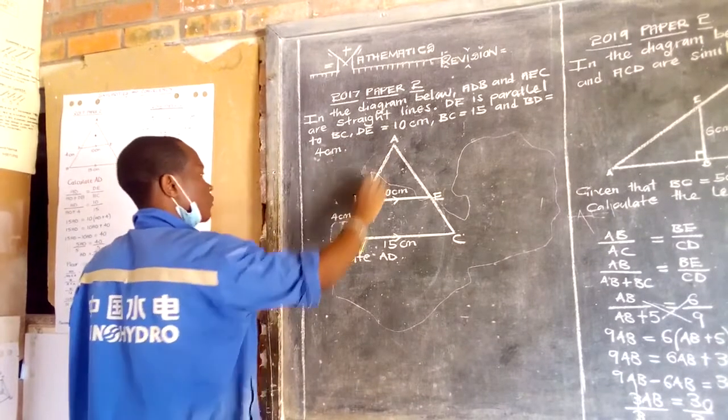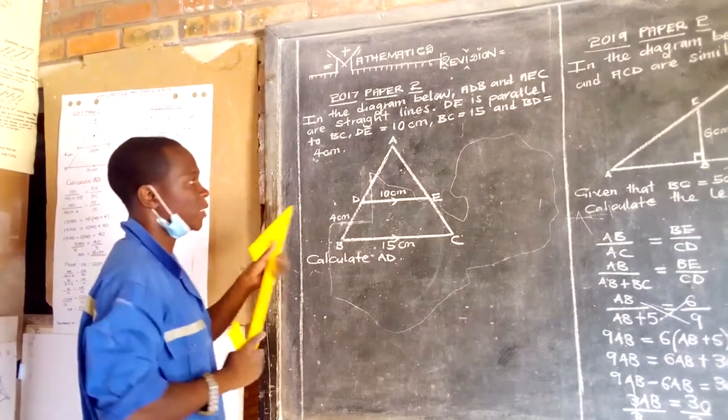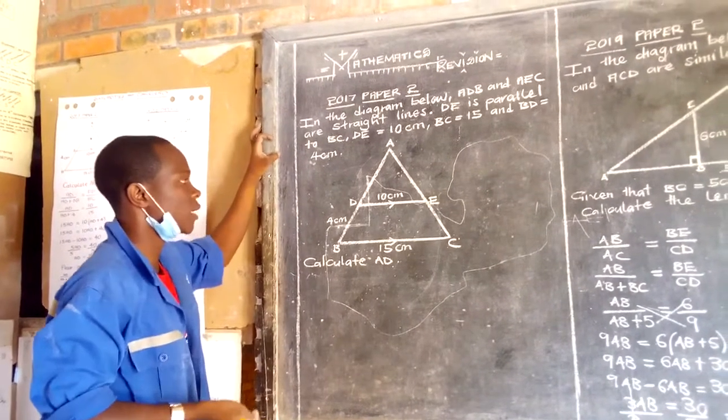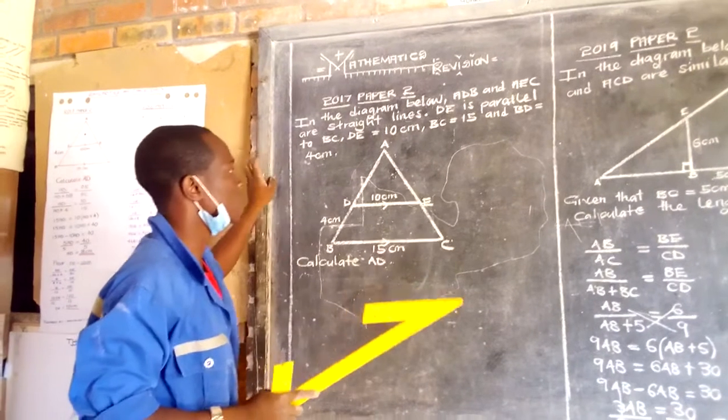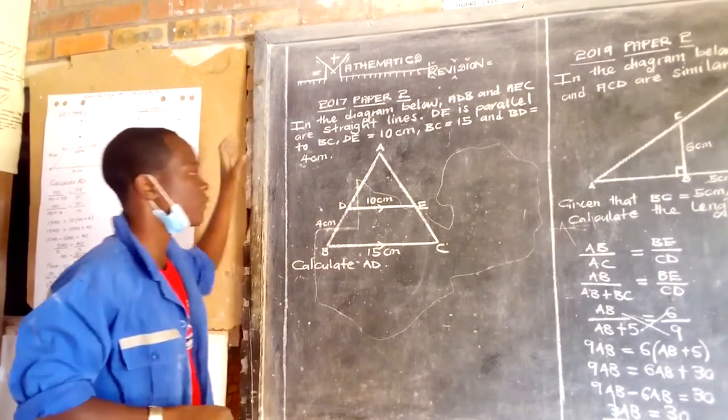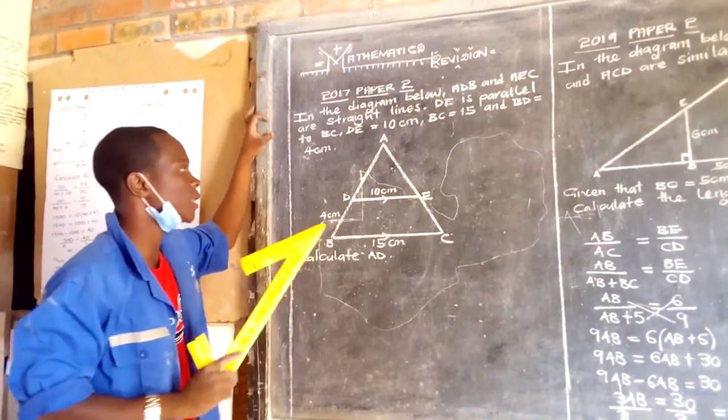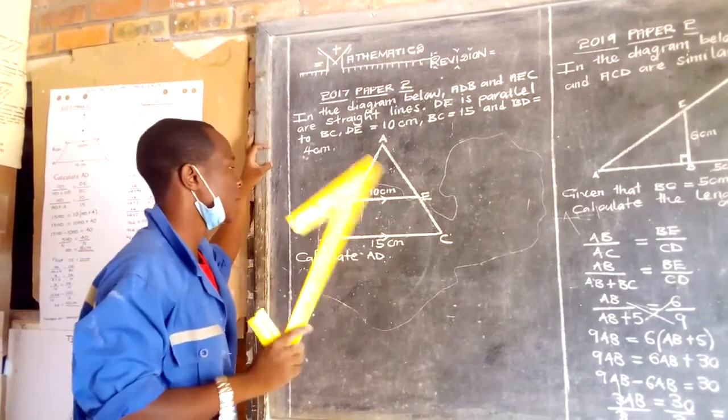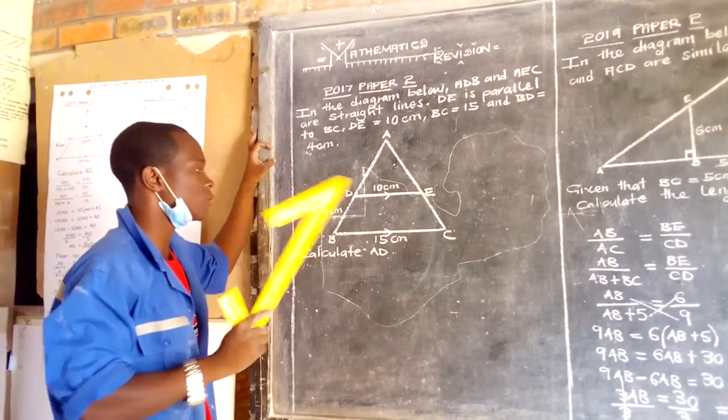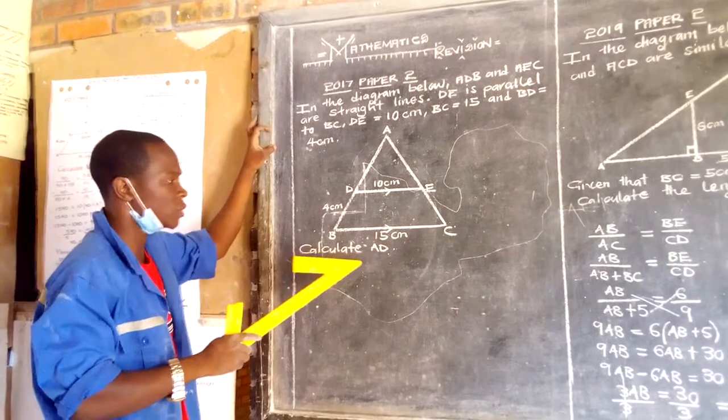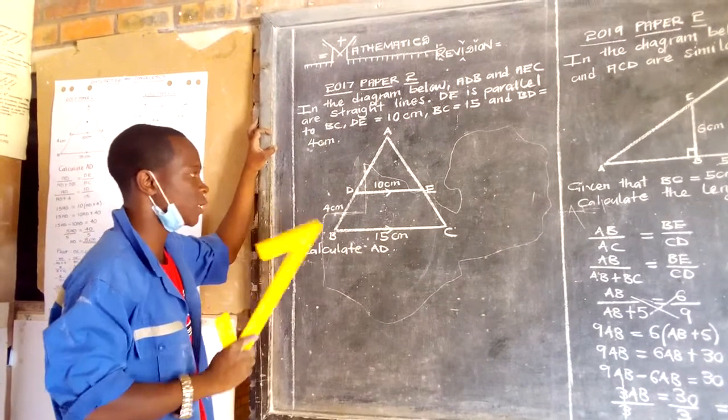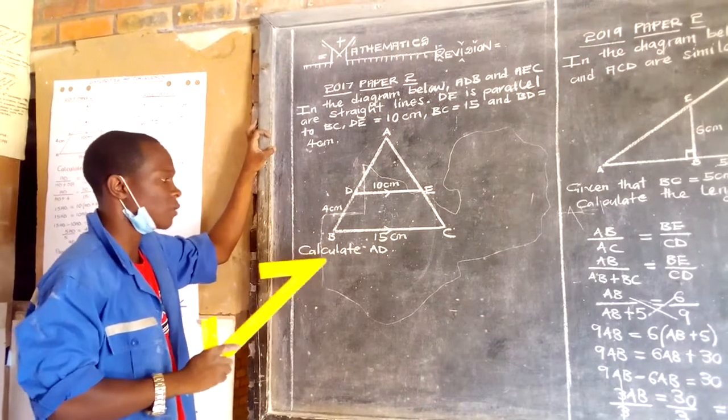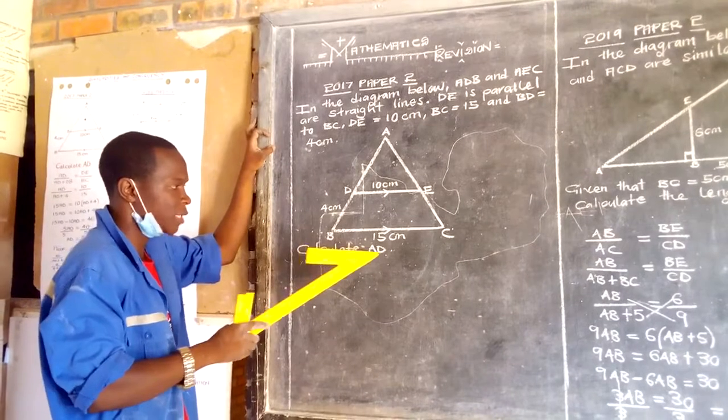So in this case, pertaining to similar triangles and congruence, the most important thing you need to do whenever you come across such type of question is you need first to identify corresponding sides. Bear in mind the length you're being taught to calculate should be the first priority. In this case, our length being taught to calculate is the length of AD.